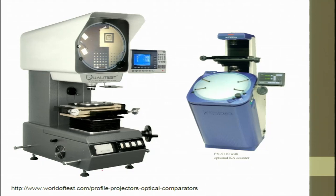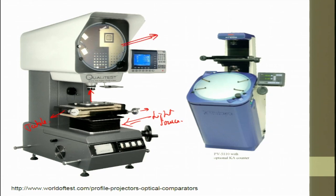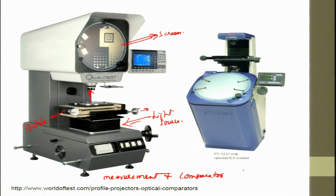This is a typical profile projector. You can see here the light source, and this is the table. The object goes here, and then it tries to magnify and this is the screen. You can use this for both measurement as well as comparison — it can function as a measurement device or a comparator device.